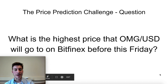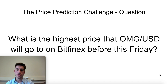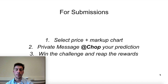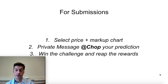We are doing part two for the price prediction challenge. The question for this week is what is the highest price that OmiseGo will go on Bitfinex before this Friday? All you have to do is join the Discord, select a price you think is going to be the highest price for OMG/USD by Friday at 1pm Eastern, mark up your chart — volume, profile, fibs, or whatever you want to use — then private message at chop your prediction. There can only be one winner, and rewards include multiple tokens and a custom shout out from me in my next video.